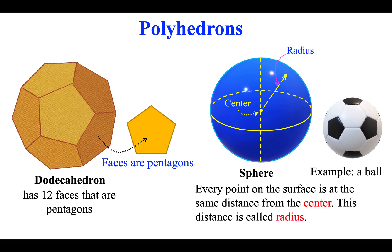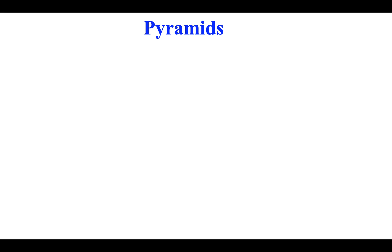Sphere. Every point on the surface is at the same distance from the center. This distance is called the radius.